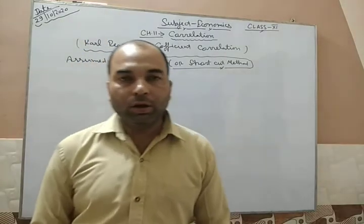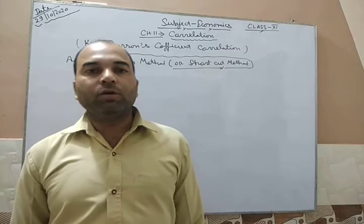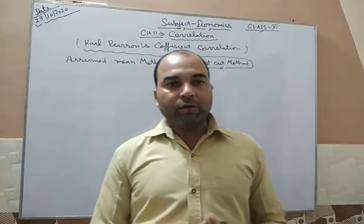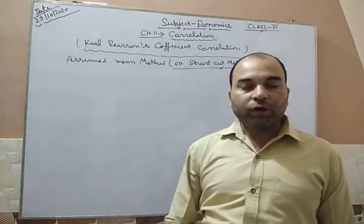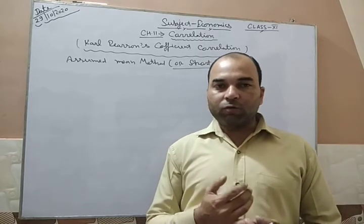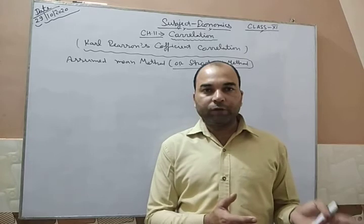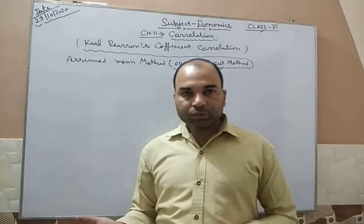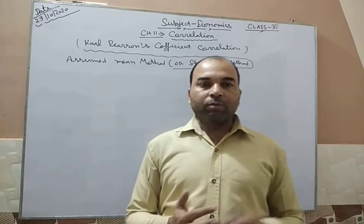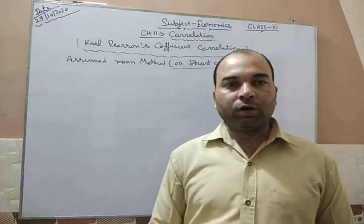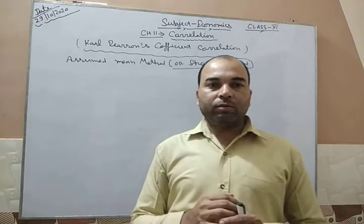Good morning, Class 11 students. I hope you are fine. You're most welcome to your online classes. Yesterday and the day before yesterday we started Chapter 11, which is correlation. I have already explained the meaning of correlation, the degree or magnitude of correlation, which ranges between 0 and 1, and also the types of correlation: positive, negative, perfect positive, perfect negative, and absence of correlation.